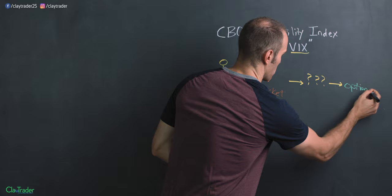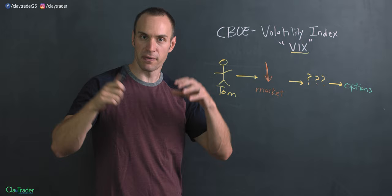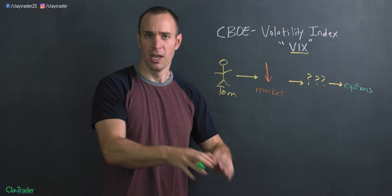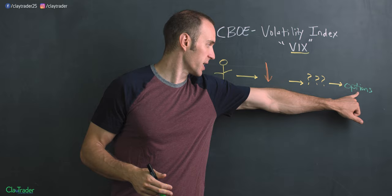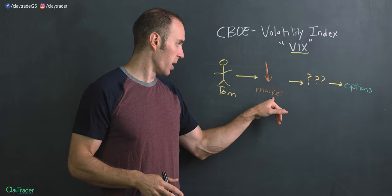Now, options — I'm not gonna go down that rabbit hole. They're like stocks. They're a derivative, and a derivative just means they are based and derived from the price of something else. But just realize that there's another vehicle out there called options, and he can use options to help protect himself a little bit from the market going down.